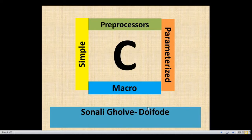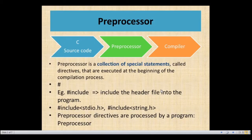What is the preprocessor and what is the role of this preprocessor? The preprocessor is a program that processes the source program before it is passed on to the compiler — before it converts source code into object code. We do some preprocessing, and during preprocessing there are modifications on the source code based on the instructions provided by the preprocessor. The preprocessor is a collection of special statements called directives that are executed at the beginning of the compilation process.